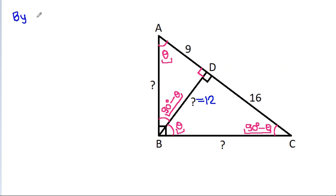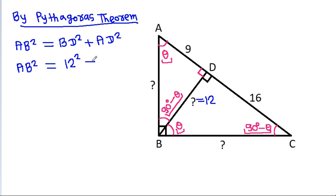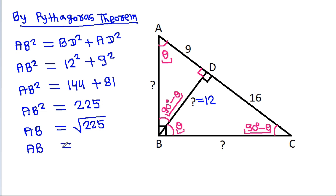By Pythagoras theorem, AB squared equals BD squared plus AD squared. AB squared equals 12 squared plus 9 squared, which is 144 plus 81, so AB squared equals 225. Therefore AB equals the square root of 225, which is 15.